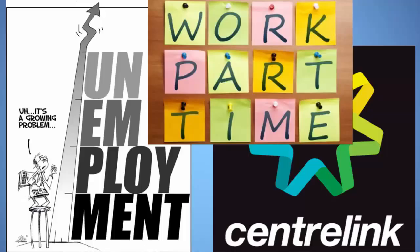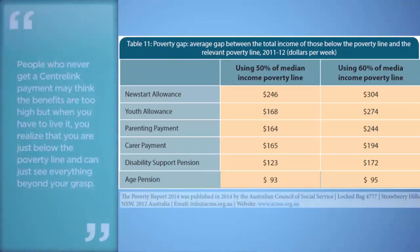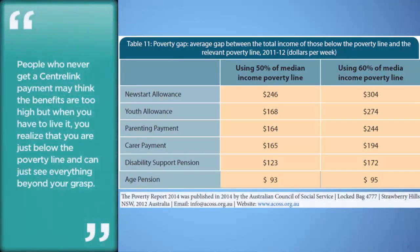For example, in 2011 and 2012, at least six different types of government Social Security payments were below the poverty line, set at 50% of median household income. These payments ranged from the Age Pension, which was $93 a week below the poverty line, to the Newstart Allowance, which was $246 a week below the poverty line.